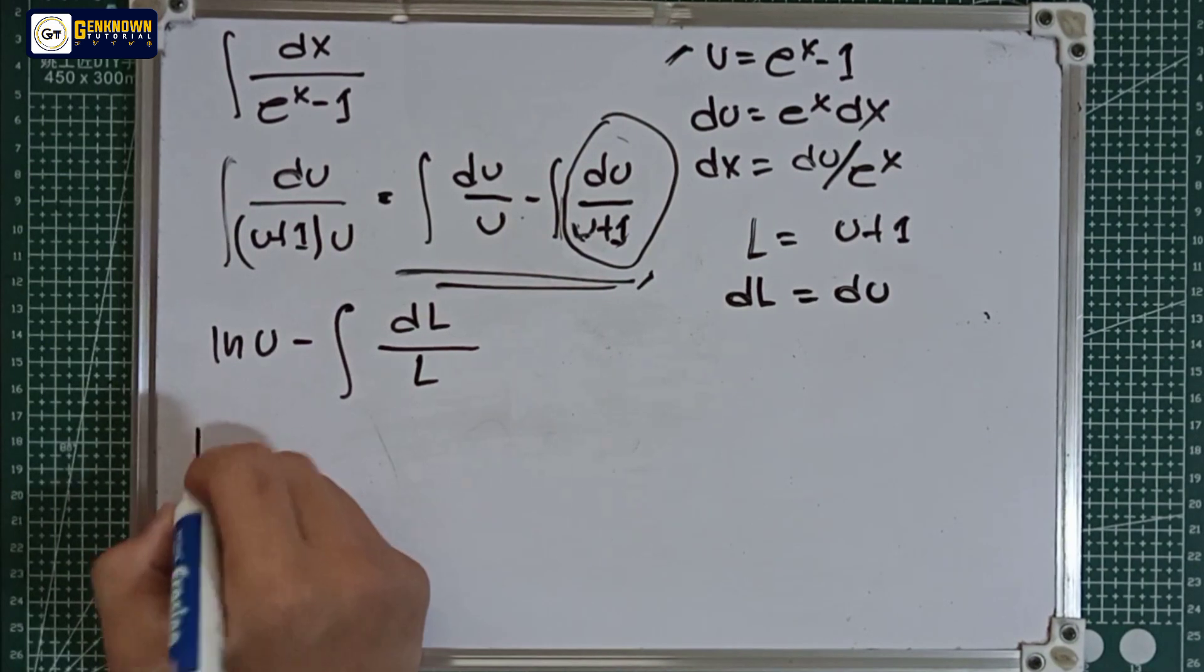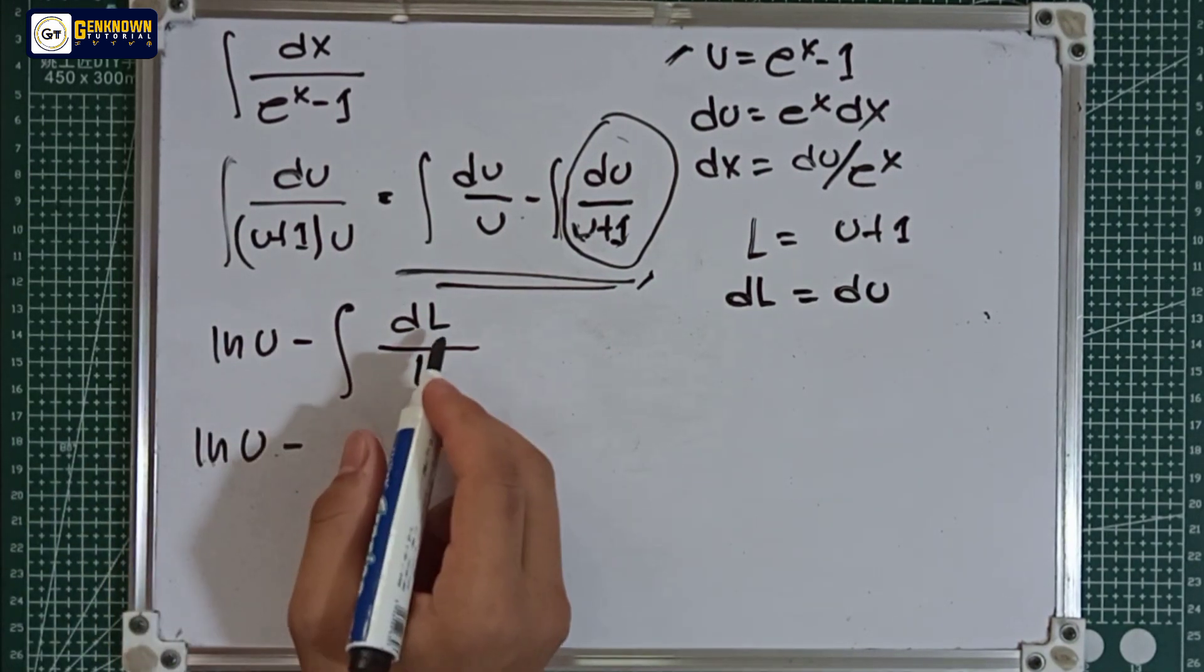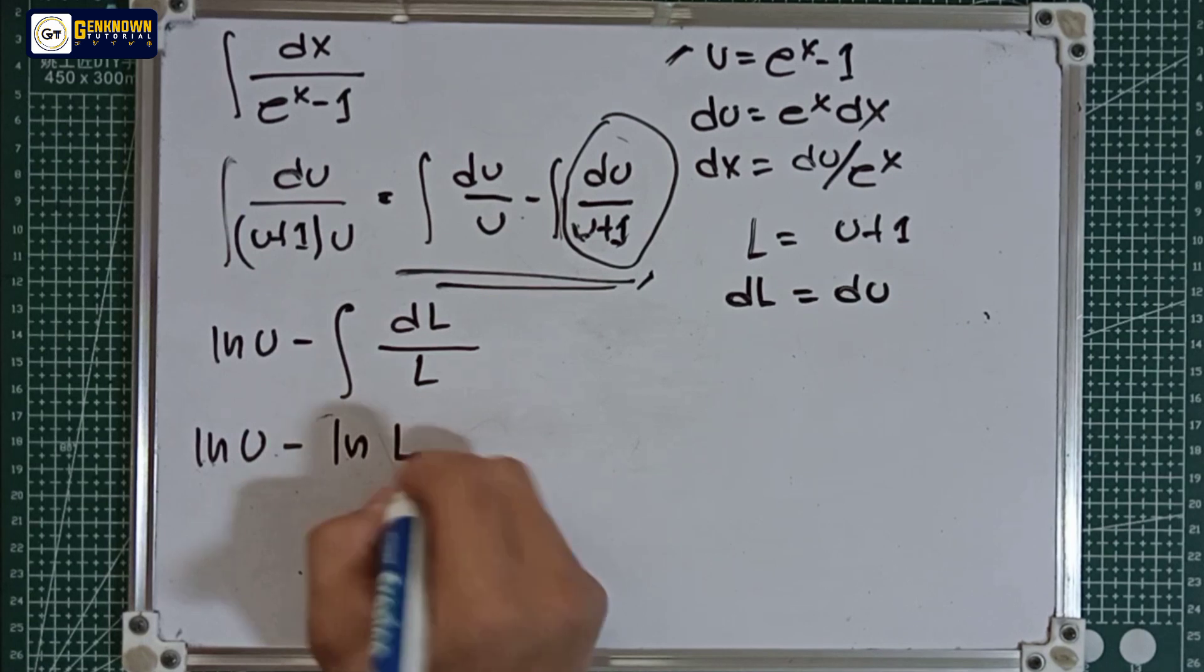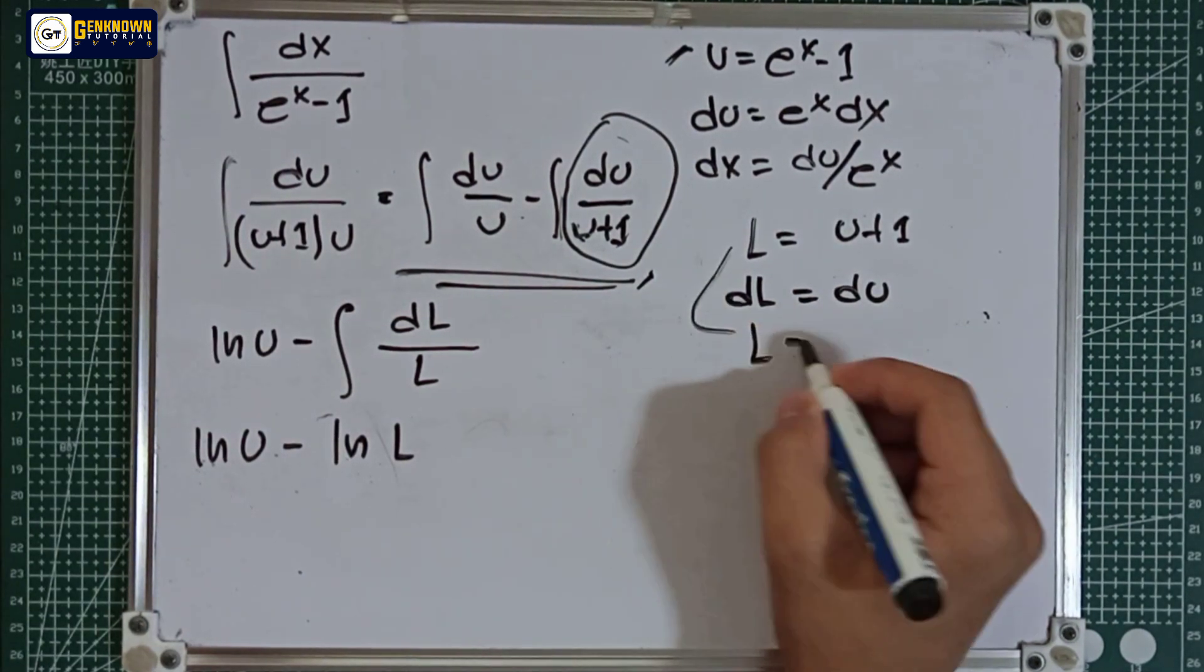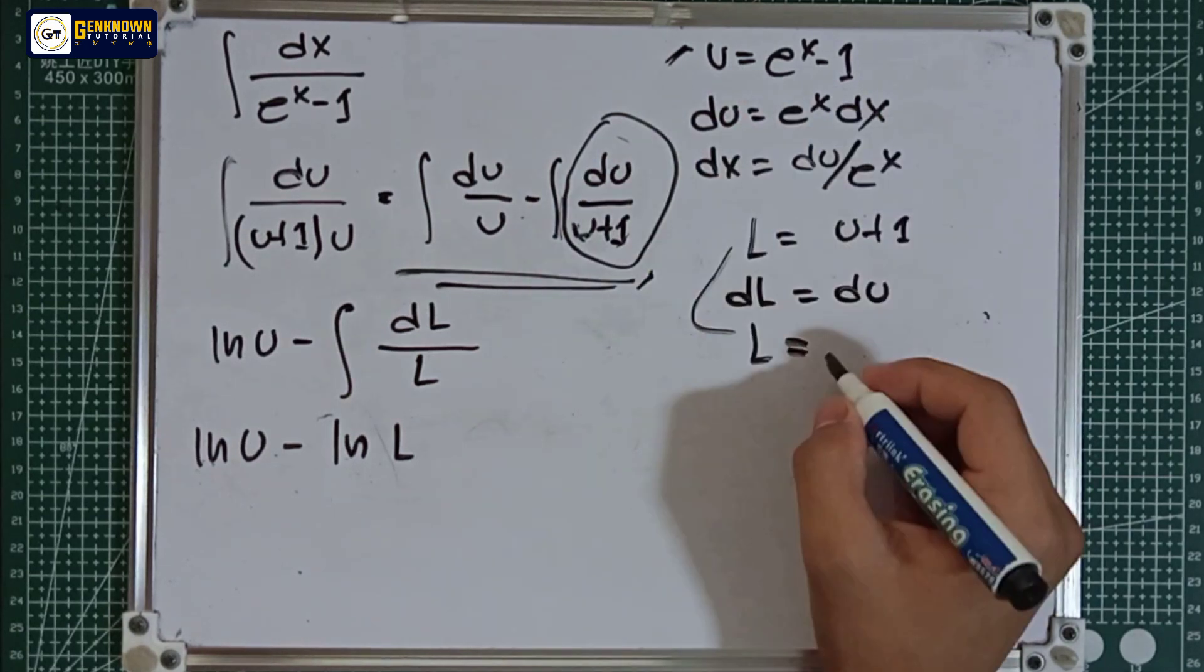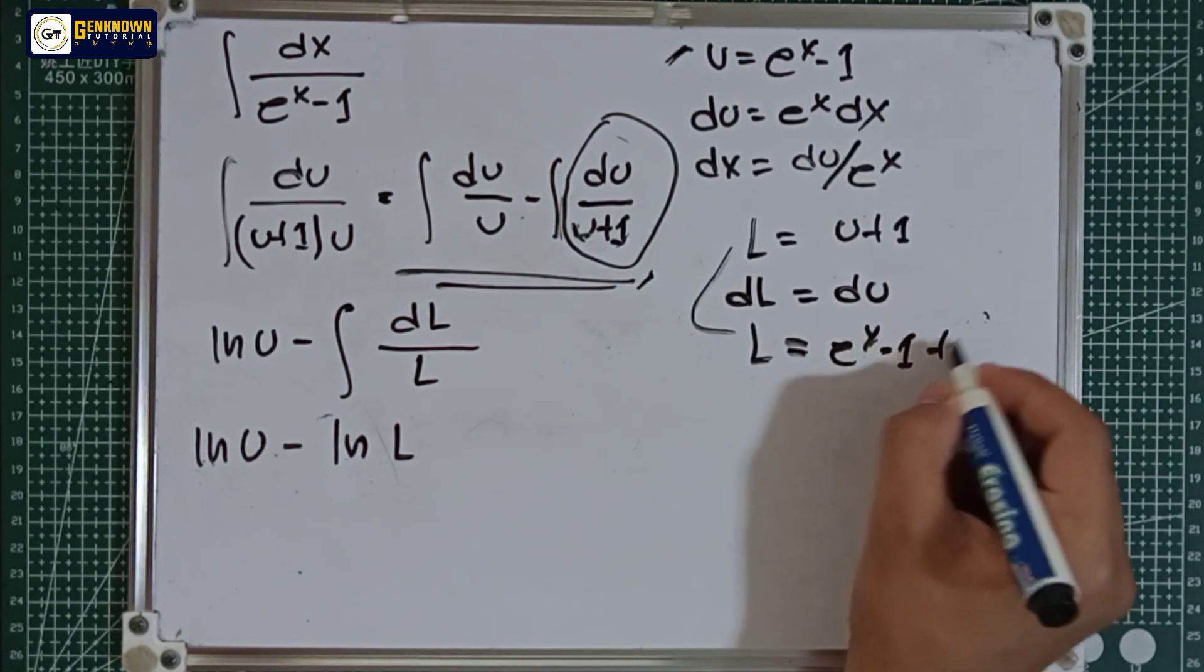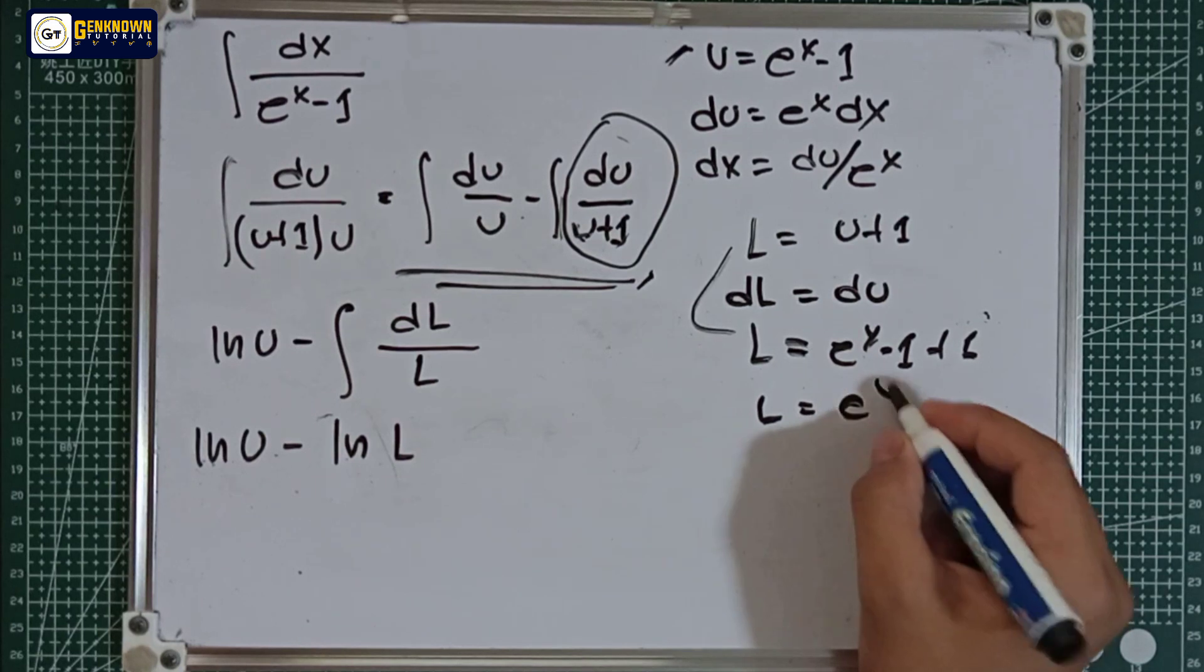So there it is, ln u minus the integral of dL over L is ln L, where L is equal to u plus 1 or e^x minus 1 plus 1 or L is equal to e^x.